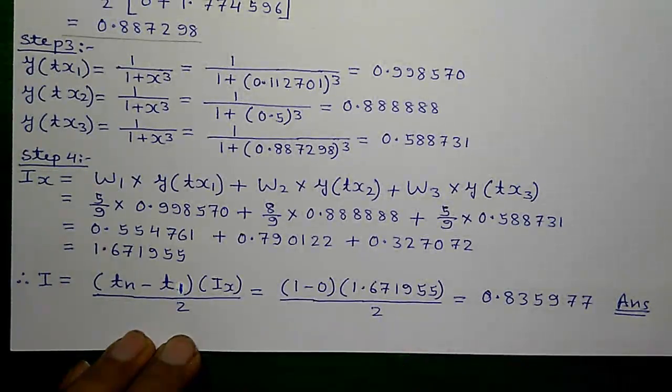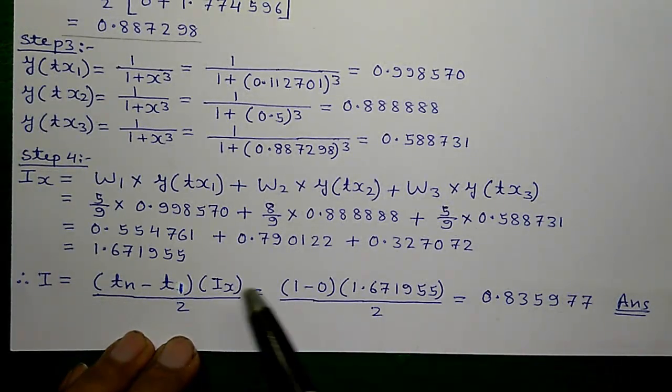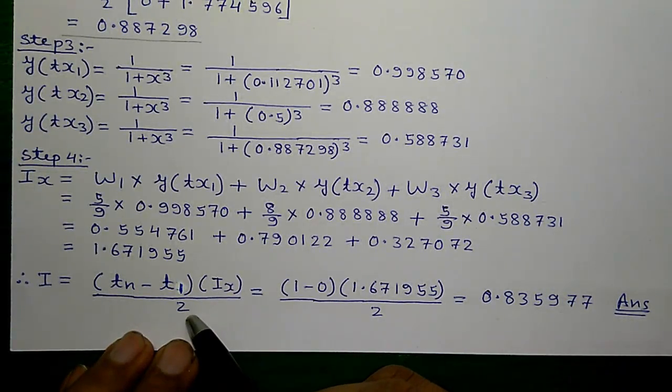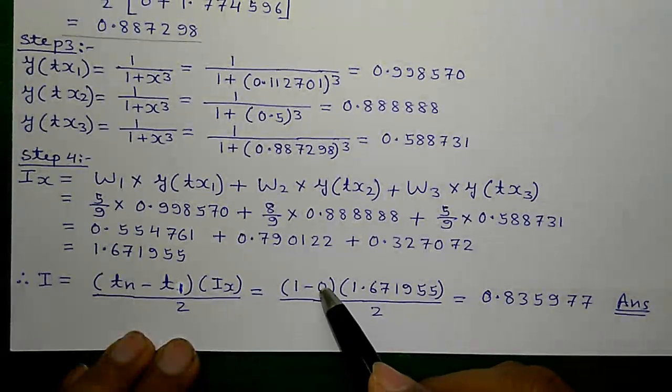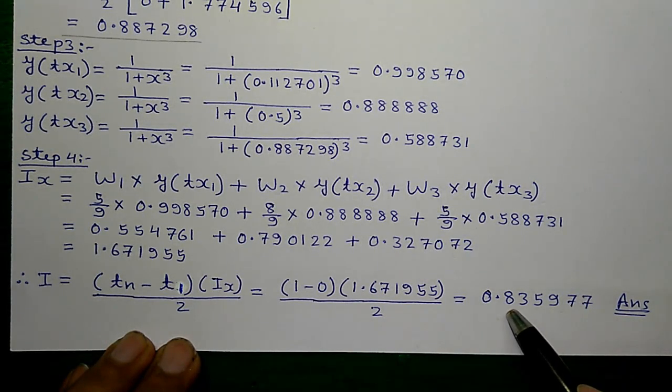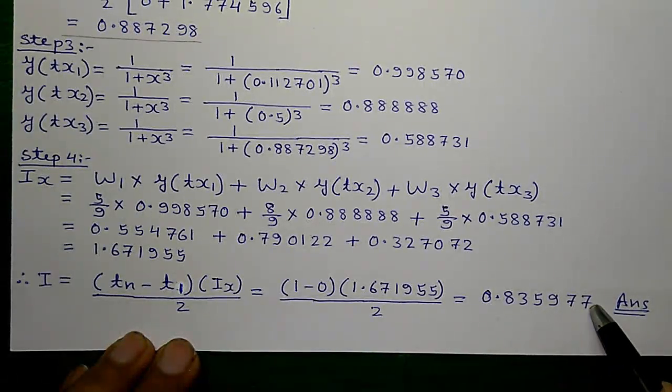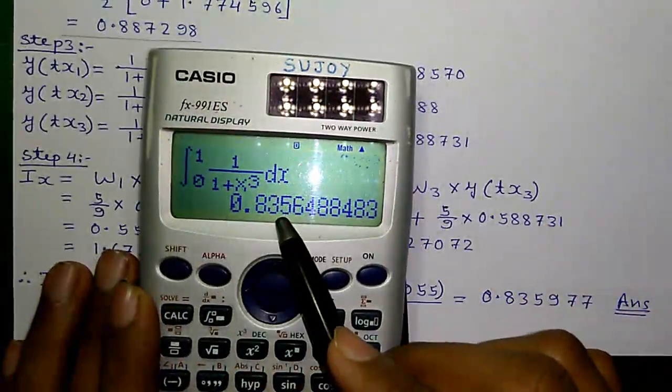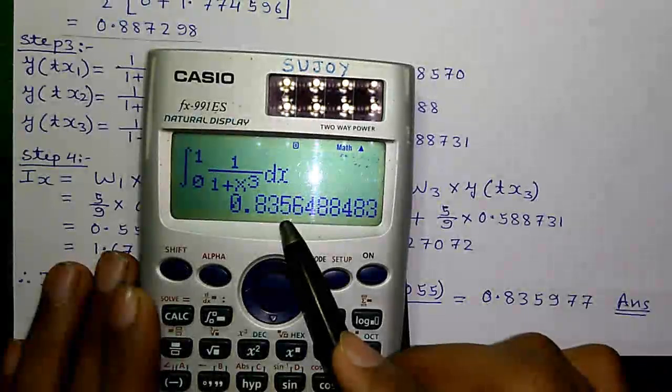Now, calculating the actual i. That's equals to tn minus t1 times ix divided by 2. That's equals to 1 minus 0 times this value divided by 2 equals to 0.835977 is our required answer. And this is the answer which we earlier obtained using the scientific calculator. Isn't it cool?